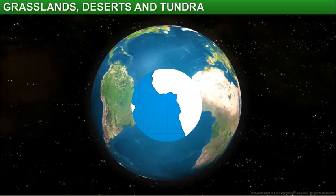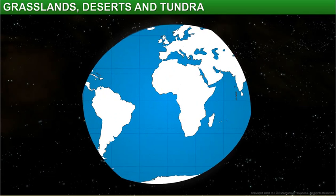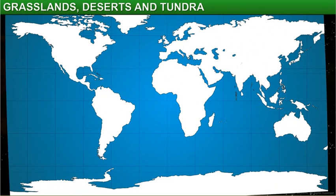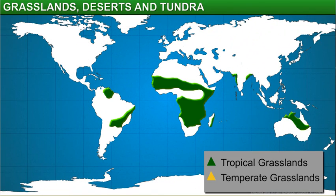These grasslands are classified into two main types: tropical grasslands and temperate grasslands.